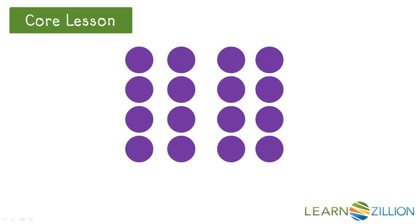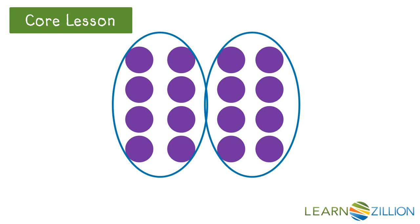There are 16 circles here. Because 16 is an even number, the circles can be divided into two equal groups. The equation 8 plus 8 equals 16 is true for these circles. There are eight circles in each group, so the add-ins are 8. The sum is 16 because there is a total of 16 circles.